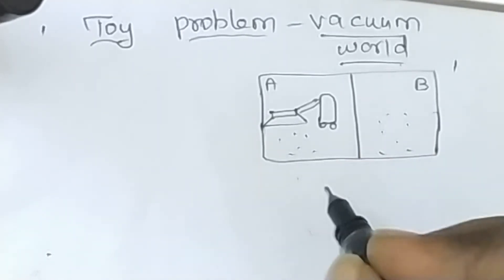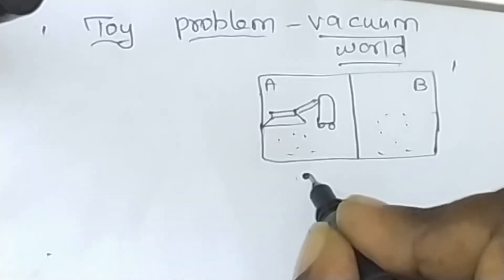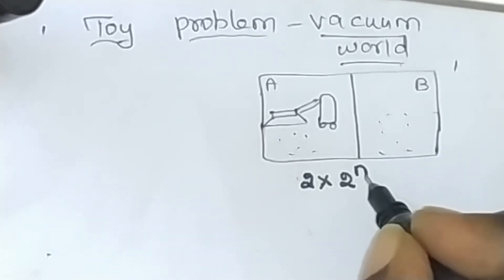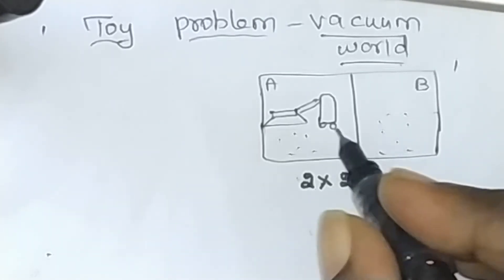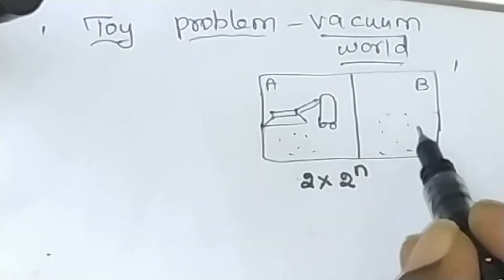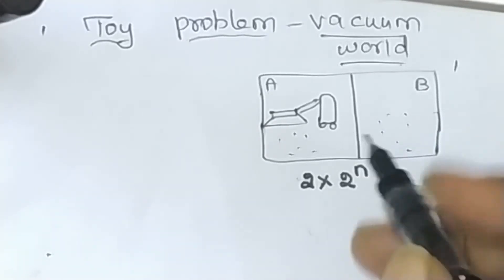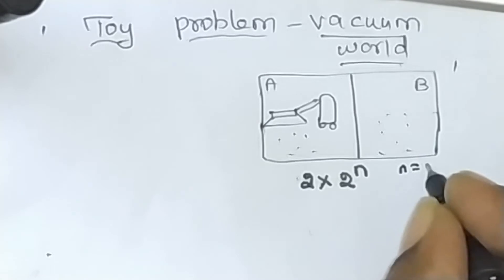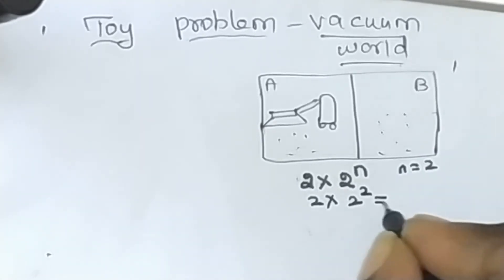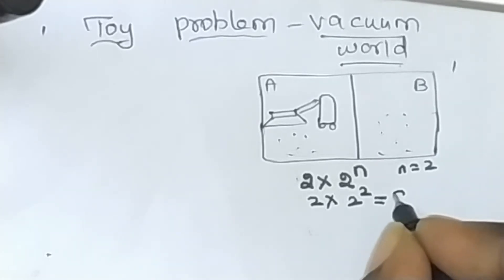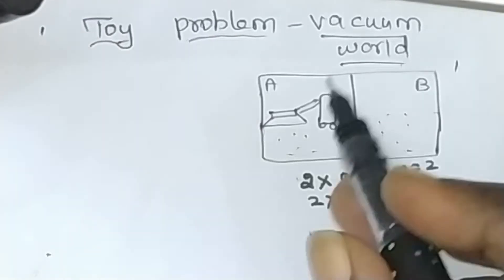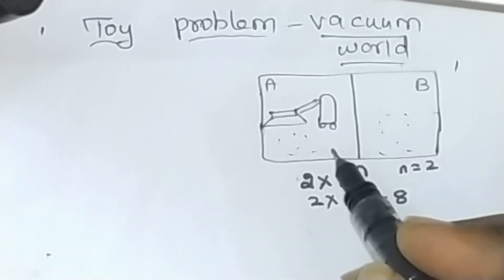To formulate this problem, we use the formula two multiplied by two to the power N, where N is the number of locations. In this problem we have taken two locations, so N equals two. Therefore two multiplied by two to the power two gives us eight possible states, meaning there are eight states of the world for this problem.